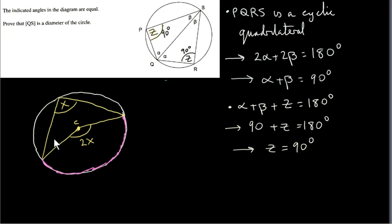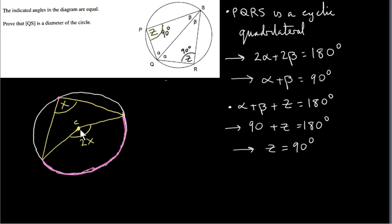Another theorem we will need is about angles standing on the same arc. The angle at the center that stands on the arc — where C is the center of the circle, so this line and this line are both radii — is twice an angle at the circumference that stands on the same arc. So if the angle at the center is 2x, then the angle at the circumference is x. For example, if the angle at the center is 140 degrees, then the angle at the circumference will be half of it, 70 degrees.